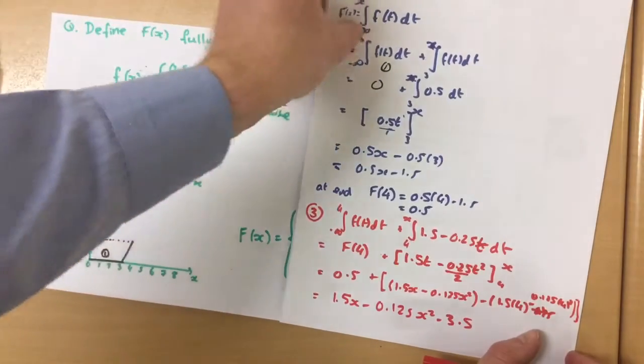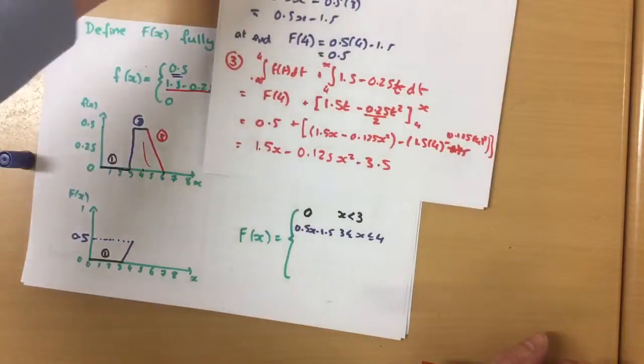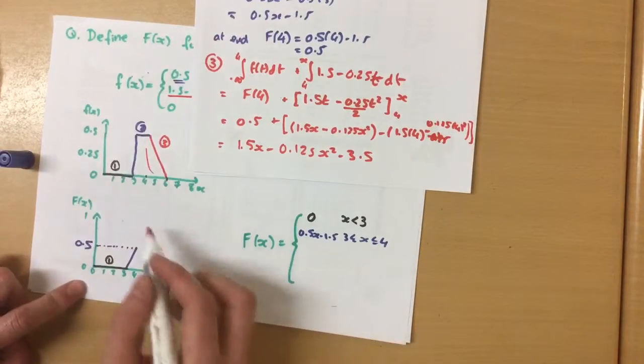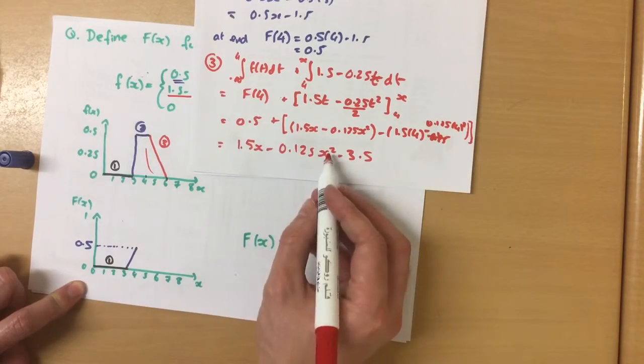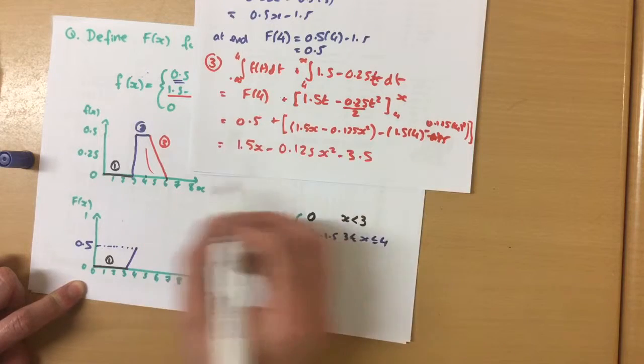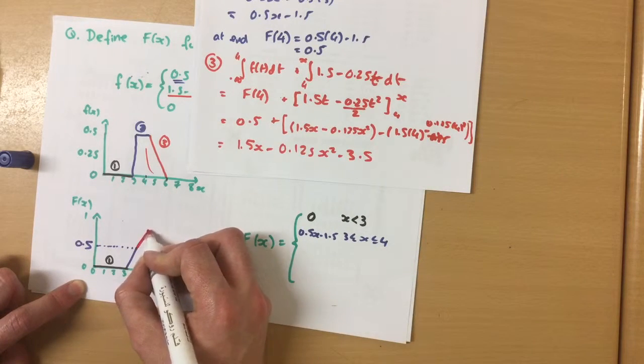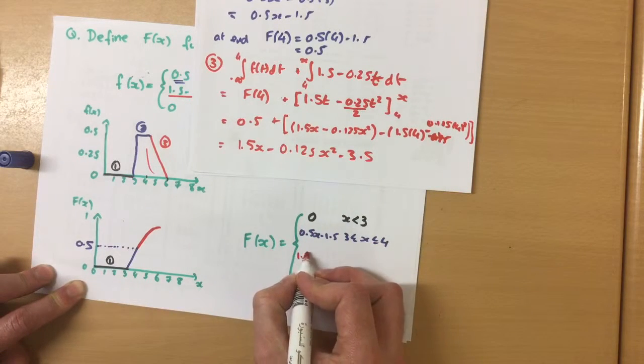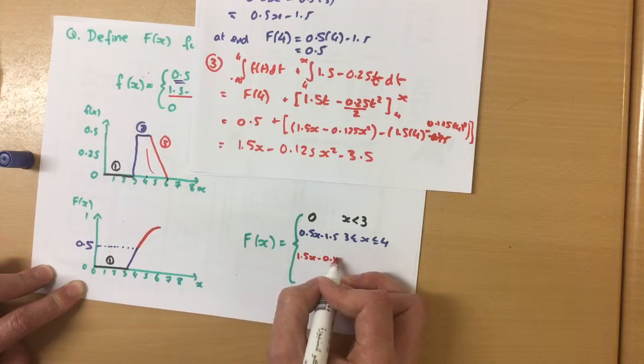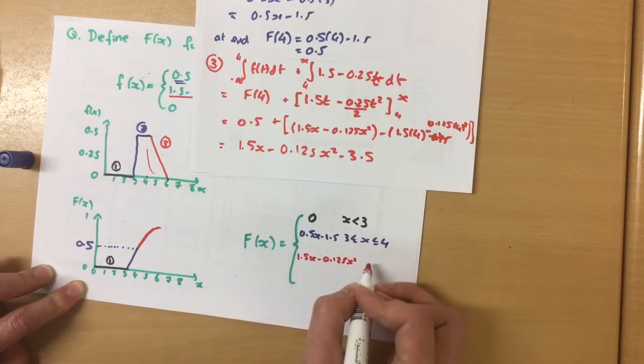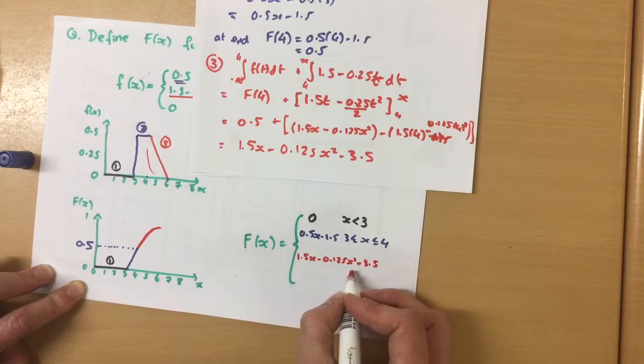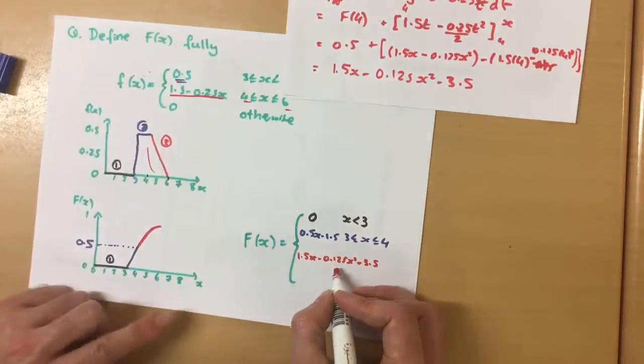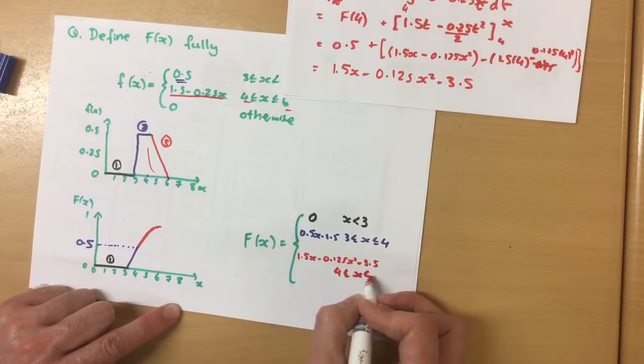1.5x minus 0.125x squared minus 3.5. Phew! That was chunky. That was a little bit to it. Wow! Okay, so between 4 and 6, it's this function here. It's a quadratic, negative, so it can be curving like this. Okay, so between, so this is our function between 4 and 6.